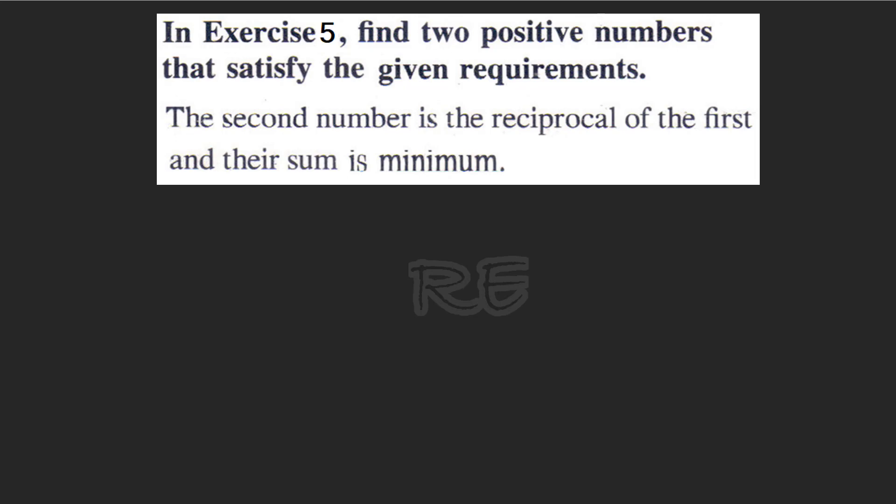Find two positive numbers that satisfy the given requirements. The second number is the reciprocal of the first and their sum is minimum. Let these two positive numbers be X and its reciprocal, 1 over X.